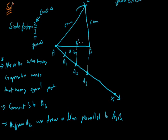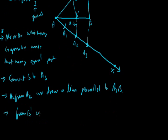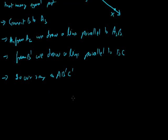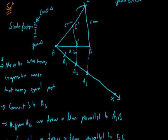This parallel line meets AB at point B dash. Then from B dash we draw a line parallel to BC. Where it meets AC, we name that point C dash. So our required triangle is A B dash C dash, whose sides are two-thirds of the sides of triangle ABC.